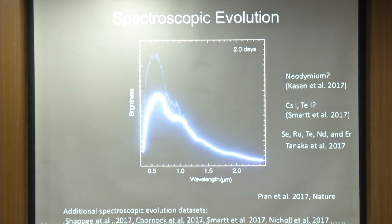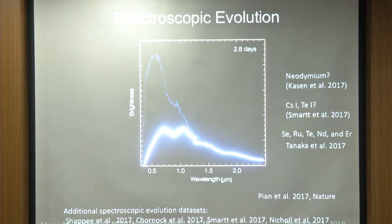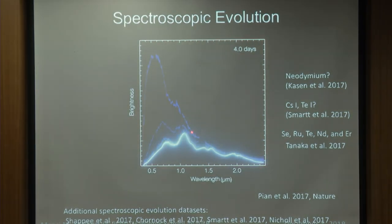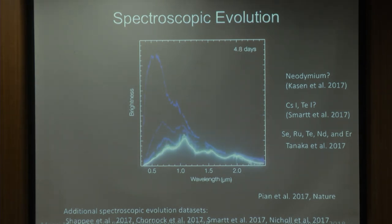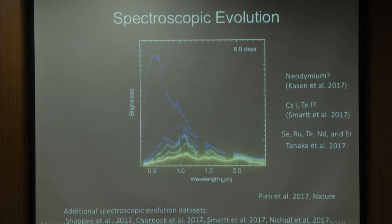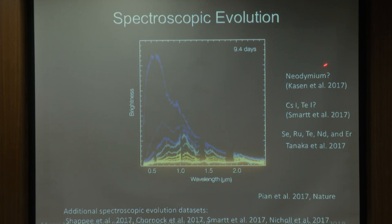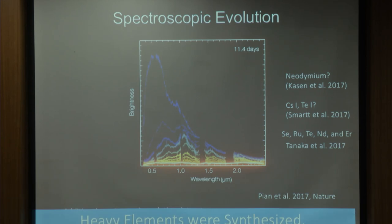In the case of GW170817, there was an exquisite series of spectroscopic data taken across the UVOIR bandpass. As time evolves, something very hot and blue very quickly became very, very red, and there was sustained red emission. There is a lot of debate right now in the community on what these bumps and wiggles actually are. Between atomic mass number 70 and 200 there are 130 elements. The question is — everybody agrees heavy elements were synthesized — but exactly which elements? Was there a lot of neodymium, maybe some cesium, maybe some tellurium? People will be hard at work trying to identify elements and make sense of this for some time to come.